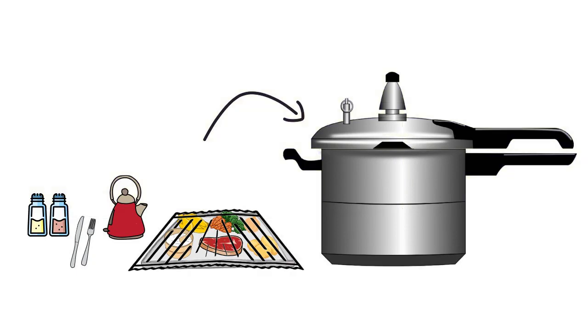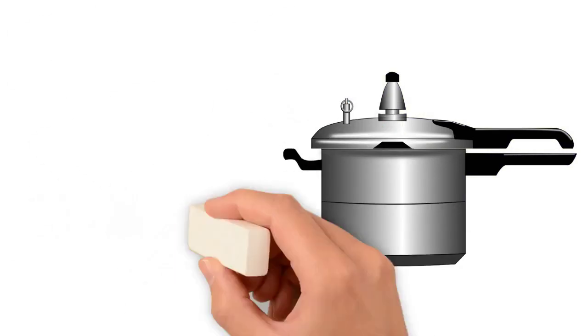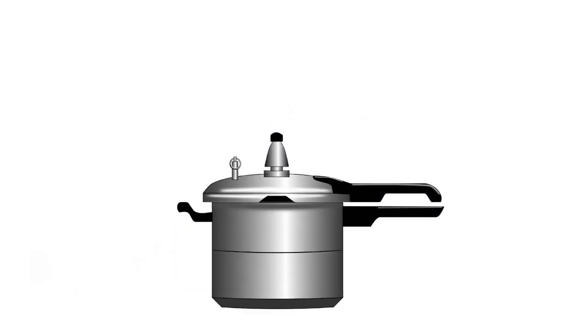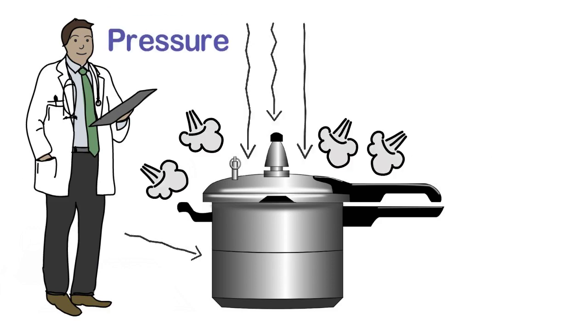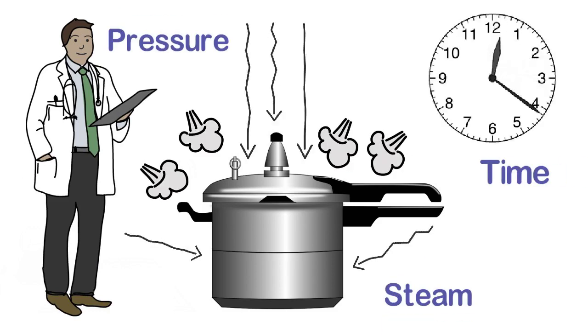The retort machine closely resembles a large pressure cooker. The meals are essentially slow cooked using a scientific combination of pressure, steam and time to ensure that all the harmful bacteria are eliminated and the food is cooked throughout.